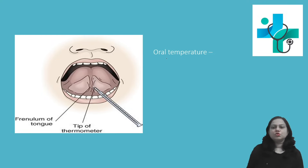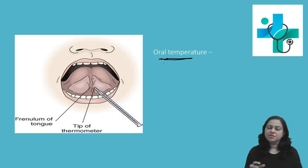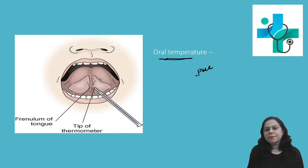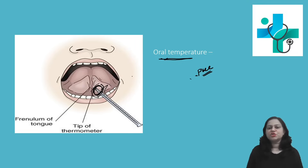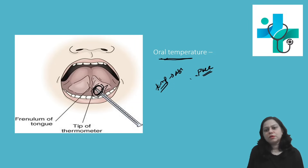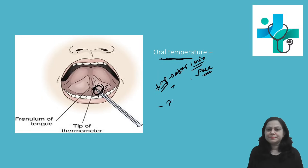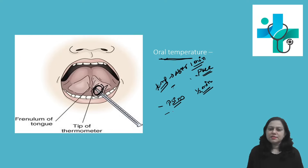Let us understand how to measure oral temperature. After cleaning the clinical thermometer and bringing the mercury level down below 35 degree Celsius by shaking, place the bulb of the thermometer below the tongue of the patient and ask the patient to keep the mouth closed. Take the reading of body temperature after one minute. Repeat and take a recording each time, increasing the duration by half a minute, till three consecutive readings do not show any change.